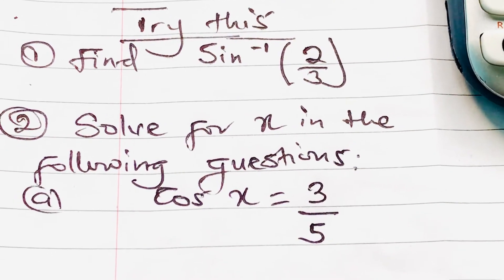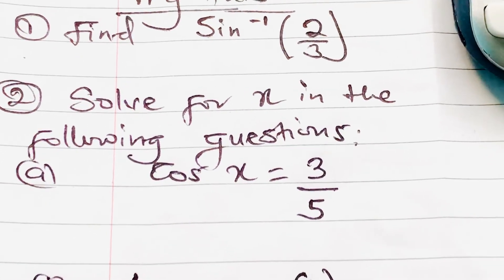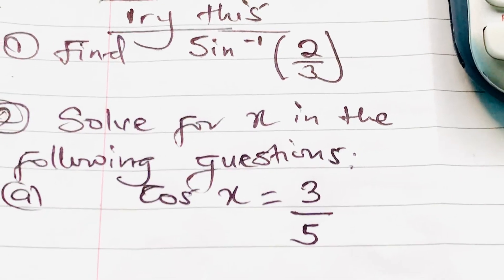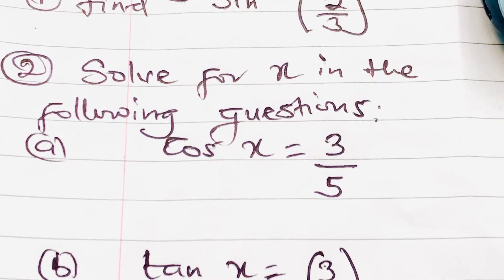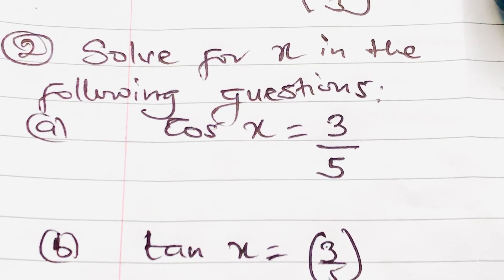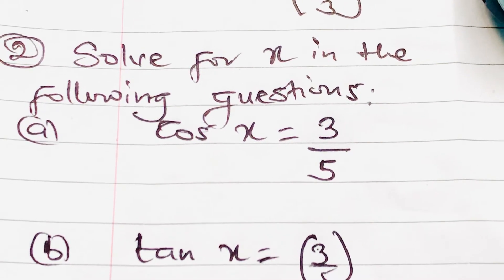Number 2: Solve for X in the following questions. A: We have cos X equals 3 over 5. So what do we do to make X stand alone? We have to find the cosine inverse of 3 over 5.